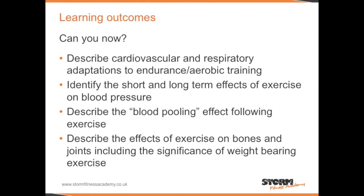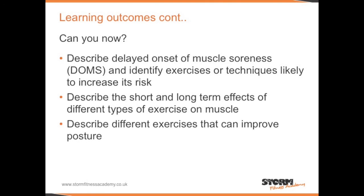Can you now describe cardiovascular and respiratory adaptations to endurance and aerobic training? Identify the short and long-term effects of exercise on blood pressure? Describe the blood pooling effect following exercise? Describe the effects of exercise on bones and joints, including the significance of weight-bearing exercise? Describe delayed onset of muscle soreness and identify exercises or techniques likely to increase its risk? Describe the short and long-term effects of different types of exercise on muscle? And describe different exercises that can improve posture?